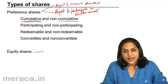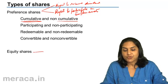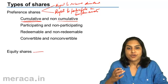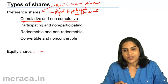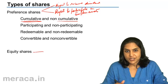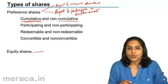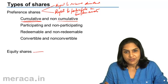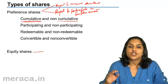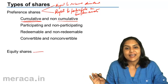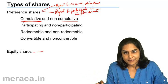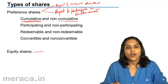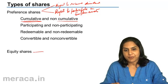On the other hand, non-cumulative preference shares mean there is no accumulation of arrears of preference dividend. If in year one there is no profit, there is no preference dividend, and this is not paid in any later year. The dividend is lost. That is a non-cumulative preference share.